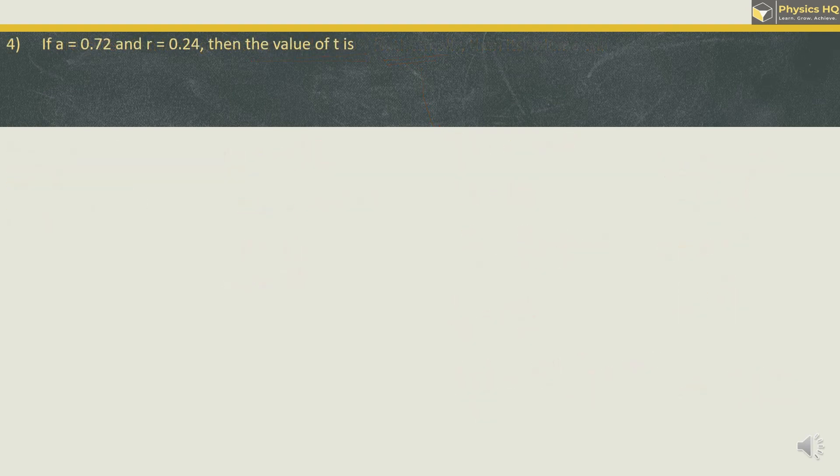In this question, they have given if A is equal to 0.72, R is equal to 0.24, then value of T is. The formula that we will use is A plus R plus T, this is equal to 1. And from this, we can calculate T is equal to 1 minus A minus R. So we got 1 minus A is given as 0.72, R is 0.24. So we can add this up. This will become 0.96. And when we subtract it, we get 0.04. So T is 0.04. Option is B.